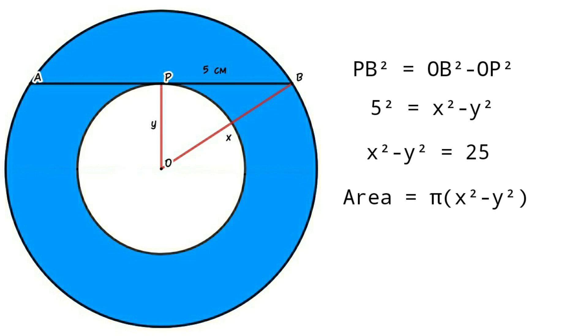Area of the blue region equals π into x² minus y². Area equals π into 25, so area equals 25π. Thank you.